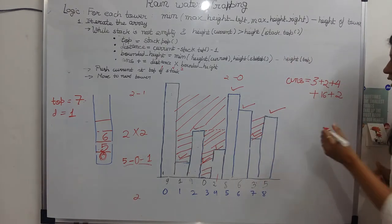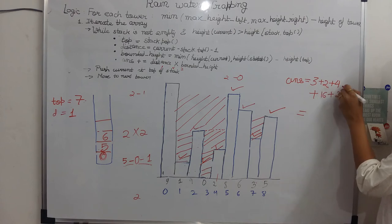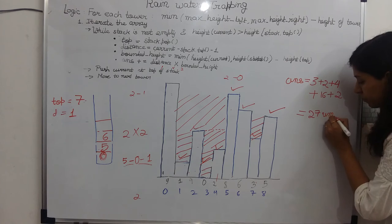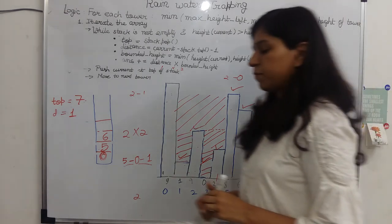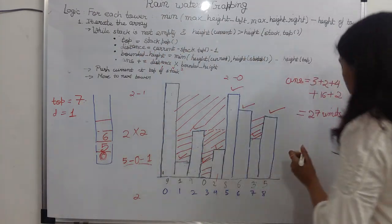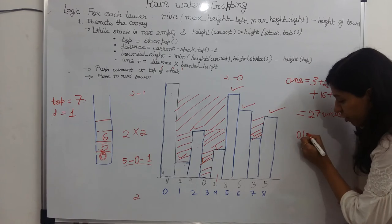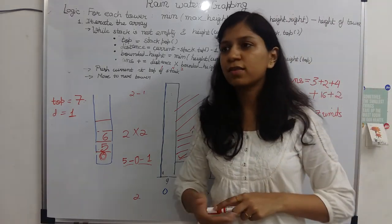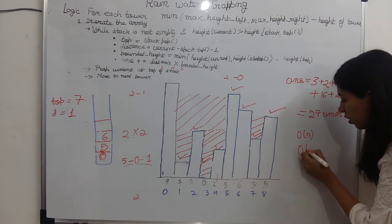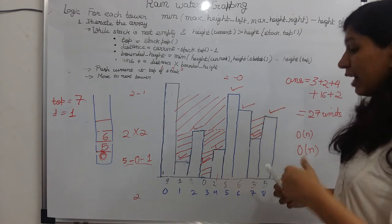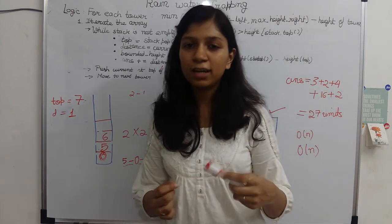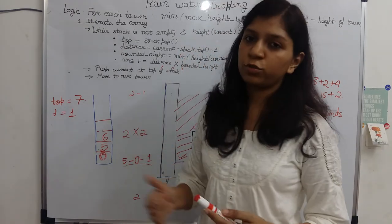Our solutions so far: 3 plus 2 is 5, 5 plus 4 is 9. In the worst case, all elements are pushed to the stack, so the space complexity is O(n). The time complexity is also O(n) since we traverse the array completely once. In the last approach we used two arrays — left max and right max — which used slightly more space. So this approach is more efficient.